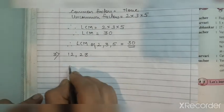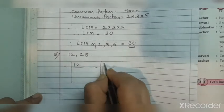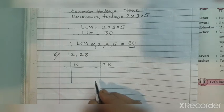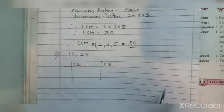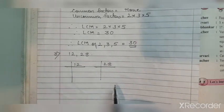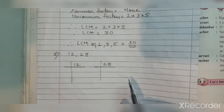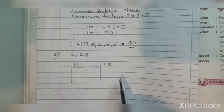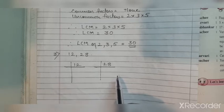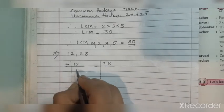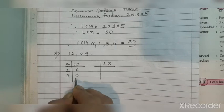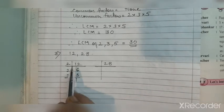The third sum is 12 and 28. We will do this by the factor method, though you can also use the listing multiples method by writing the tables of 12 and 28 up to at least 10 terms. If you find a common multiple you write it as LCM; if not, keep writing until you find one. For the factor method, 12 and 28 are both divisible by 2, which is a prime number.